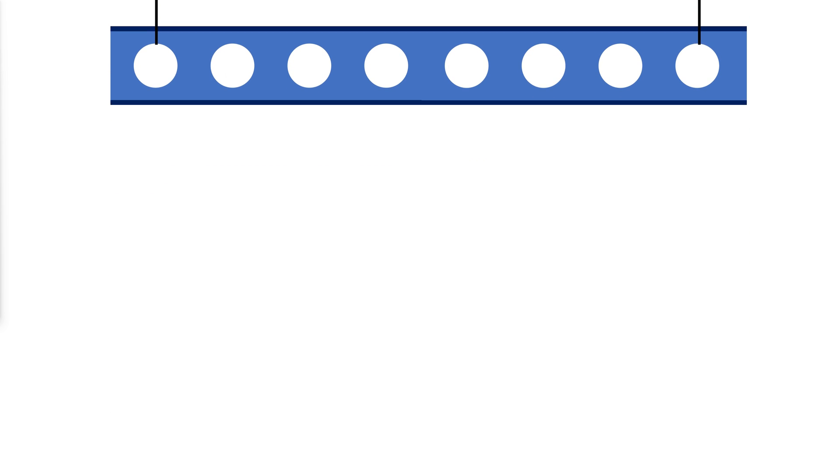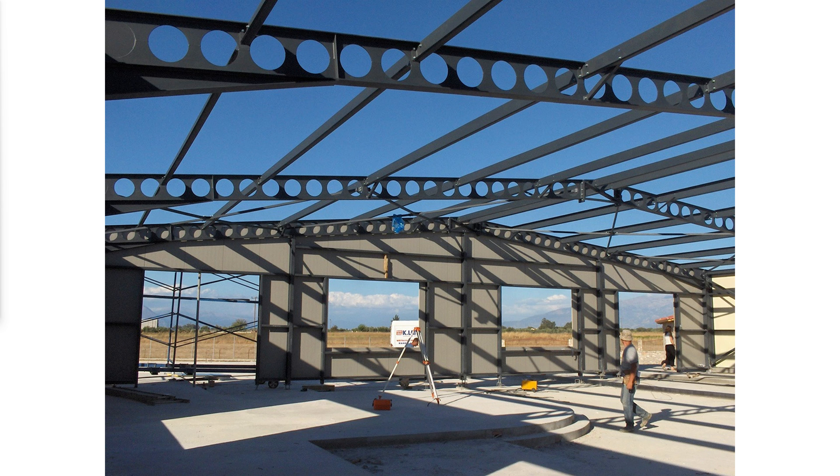During lifting and handling procedures, laterally unbraced castellated and cellular beams may exhibit instability under the relative light loading of structure's self-weight combined with the weight of an erector. Caution must be exercised during the installation process. Therefore, it is recommended that erection bracing be used for the installation of cellular and castellated beams.